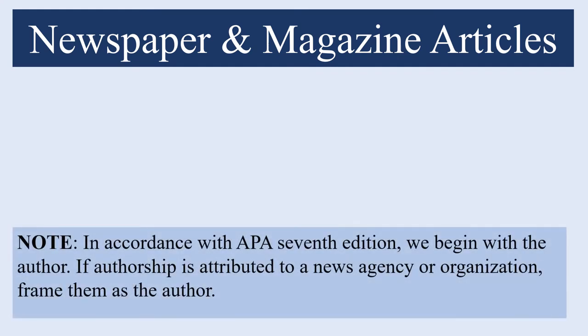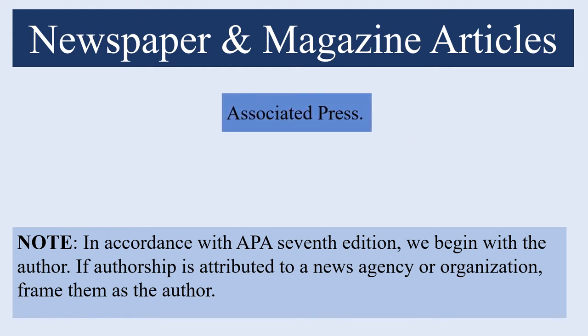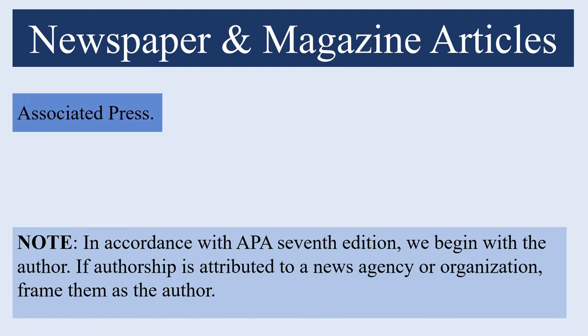In accordance with APA 7th edition we'll begin with the author. For newspaper and magazine articles, authorship is sometimes attributed to a news agency or organization rather than an author. In this case we will frame the organization or news agency as the author — in this case the Associated Press.